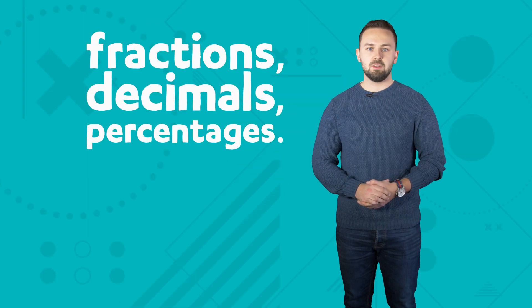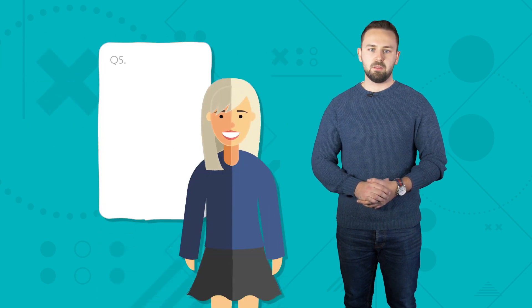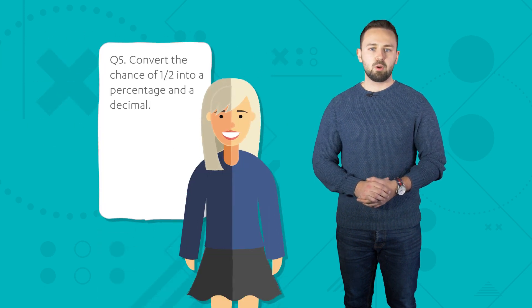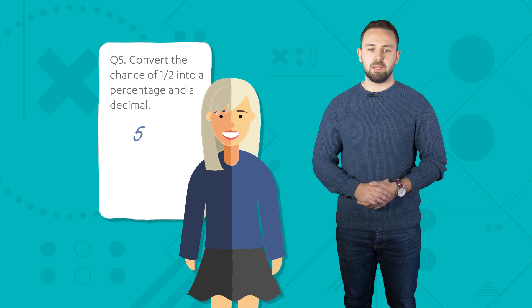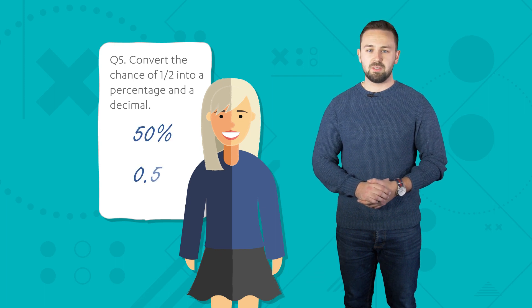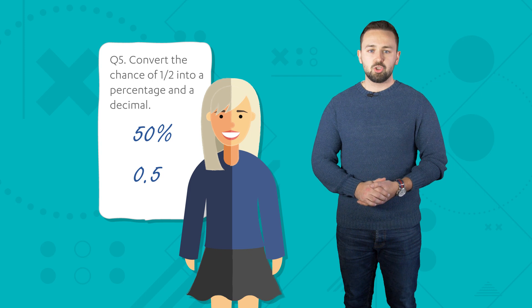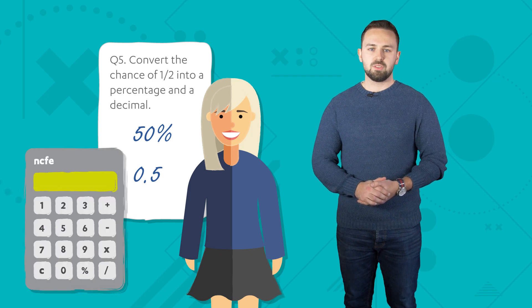Error nine: fractions, decimals and percentages. Learners are unable to convert between fractions, decimals and percentages. For probability questions, it's quite common for learners to be asked to display their answer as a percentage or a decimal, and learners should be encouraged to use their calculator to do this.